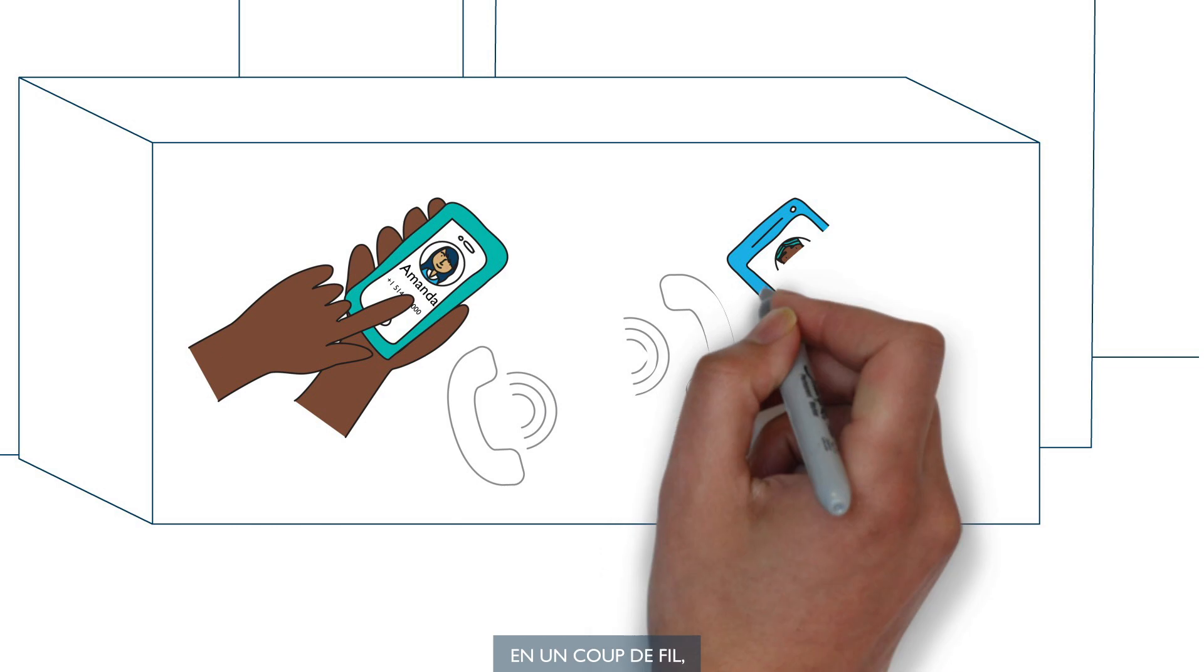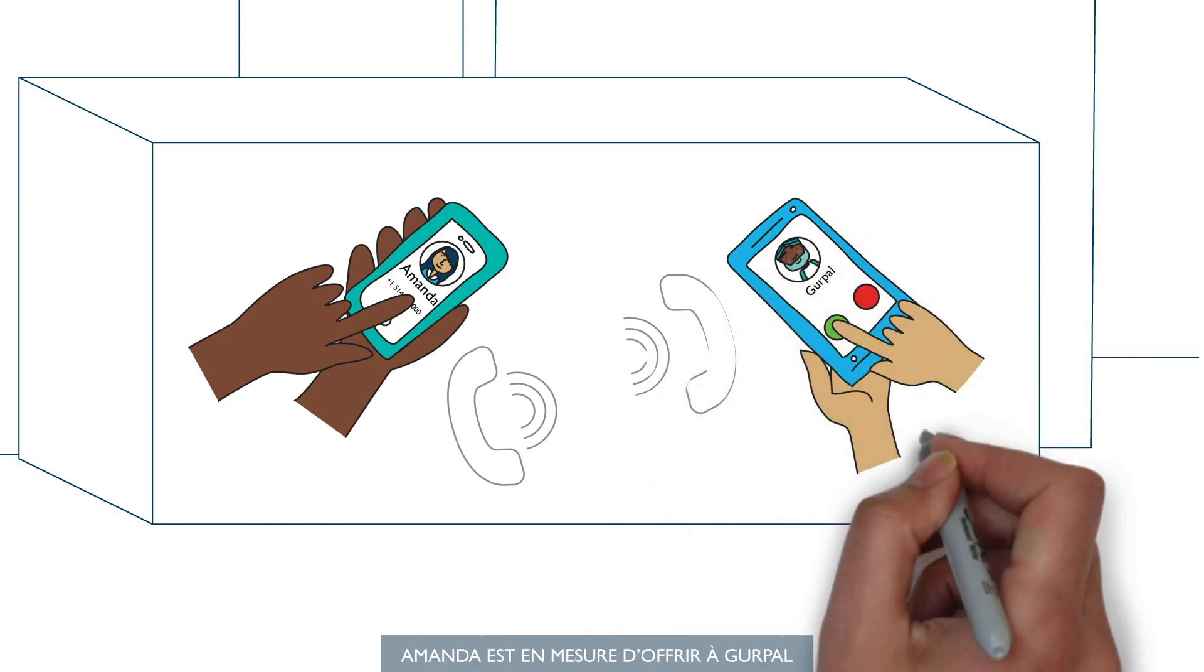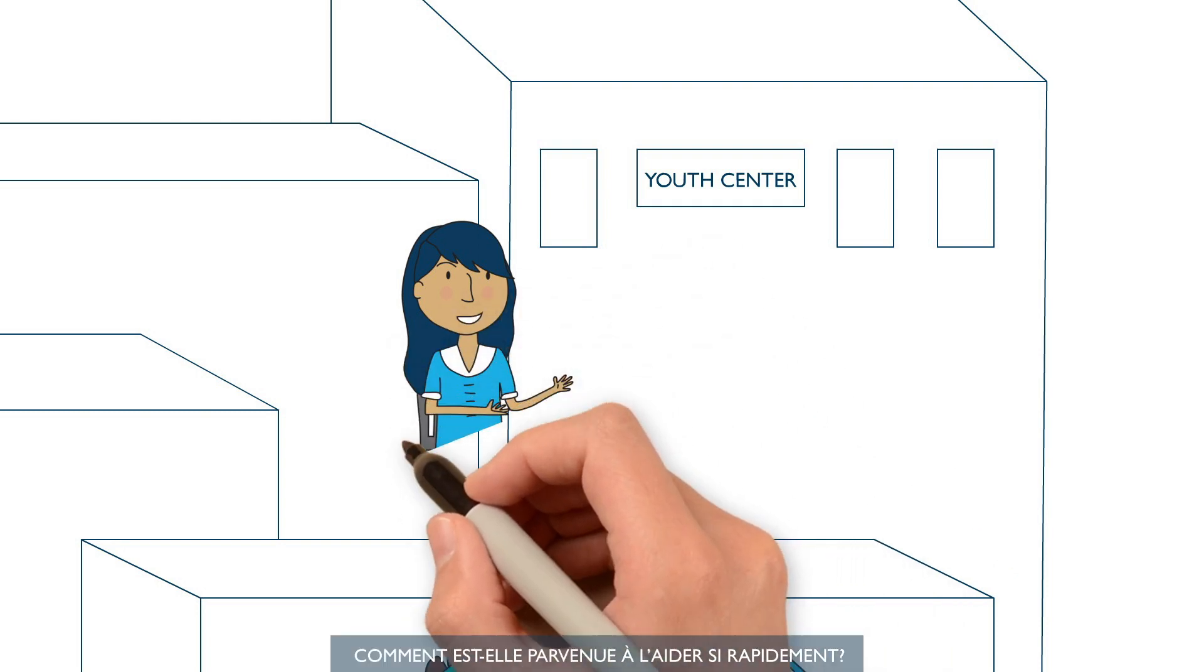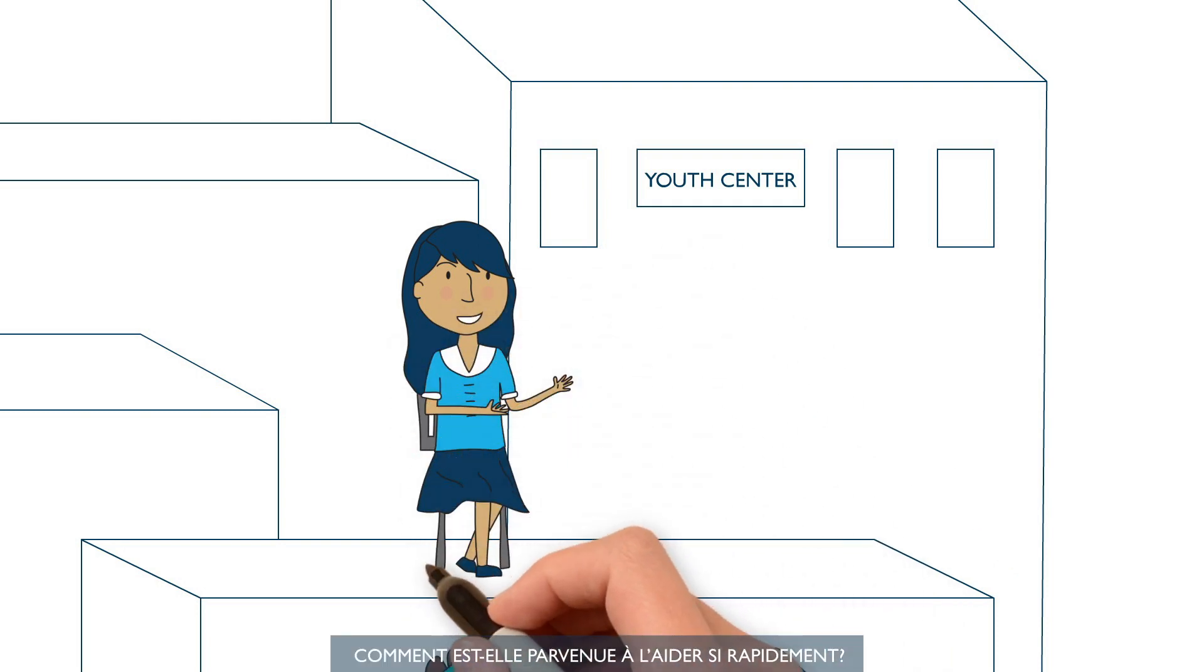With only one phone call, Amanda is able to offer Gurpal the support he needs. But how was she able to provide support for him so quickly?